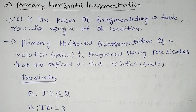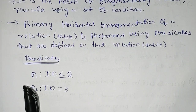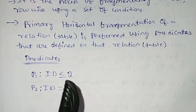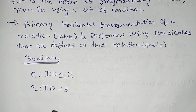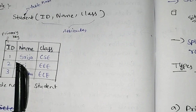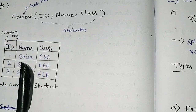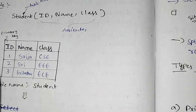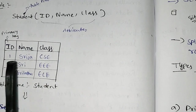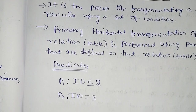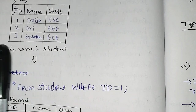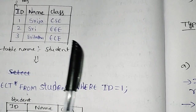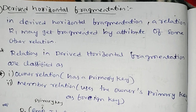Predicates p1 to pn: for example, predicate p1 is id less than or equal to 2, and predicate p2 is id equals 3. This is the fragmentation process — we have a set of conditions applied row-wise. For p1: id ≤ 2 means ID numbers 1 and 2 are included. For p2: id = 3 means only ID number 3 is in that fragment. Each fragment comes from a separate table filtered by these predicates.